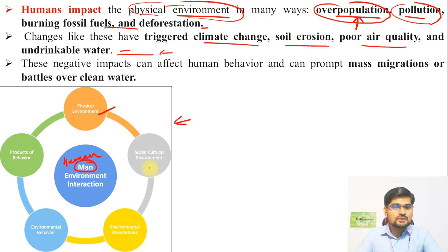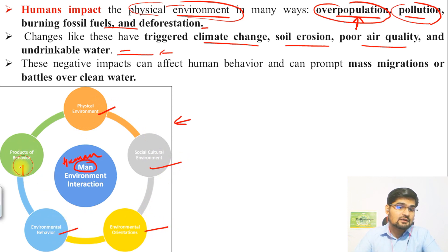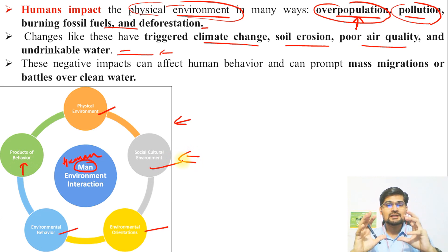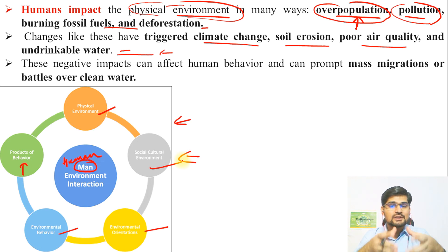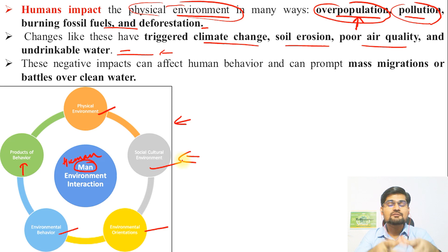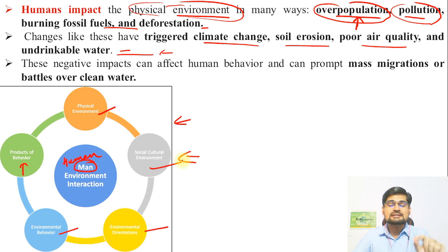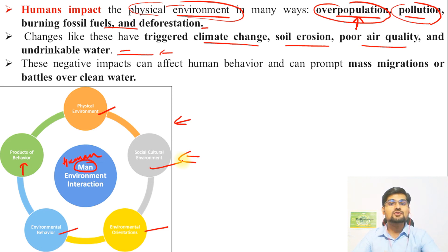The flow diagram covers physical environment, sociocultural environment, environmental orientations, environmental behavior, and products of behavior. To understand this better, you need to understand behavioralism in geography, where environment is external to the human and the human has a perception of that external environment. If you have not watched the video on behavioralism, go to the playlist on perspectives in human geography and watch it — environment perception and behavior are linked, which is very important for understanding human influence on environment.